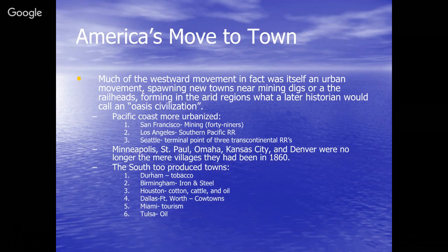The South also produced significant population centers tied to its industries and cash crops. Durham, North Carolina owes its success to tobacco production; Birmingham, Alabama was called the Pittsburgh of the South because of its iron and steel industries. Houston, Dallas-Fort Worth as cattle and ranching towns, Miami and its tourism, and Tulsa, Oklahoma with its oil industry all emerged as major cities.